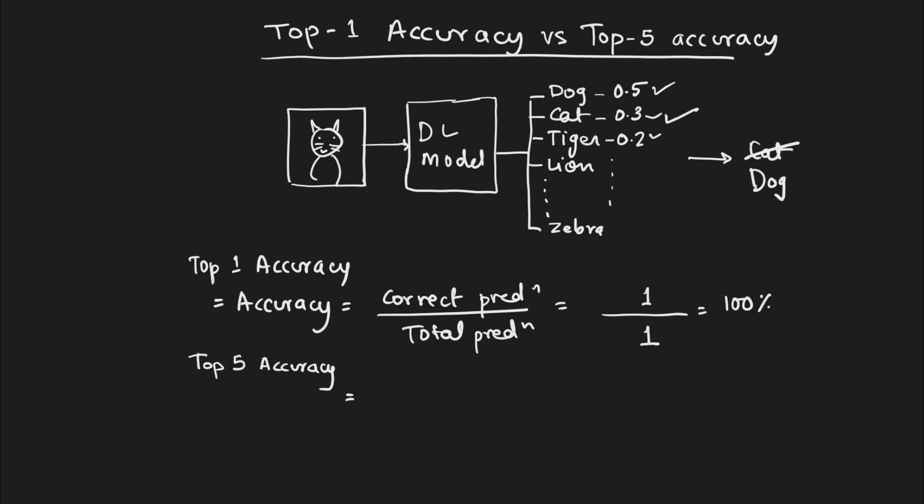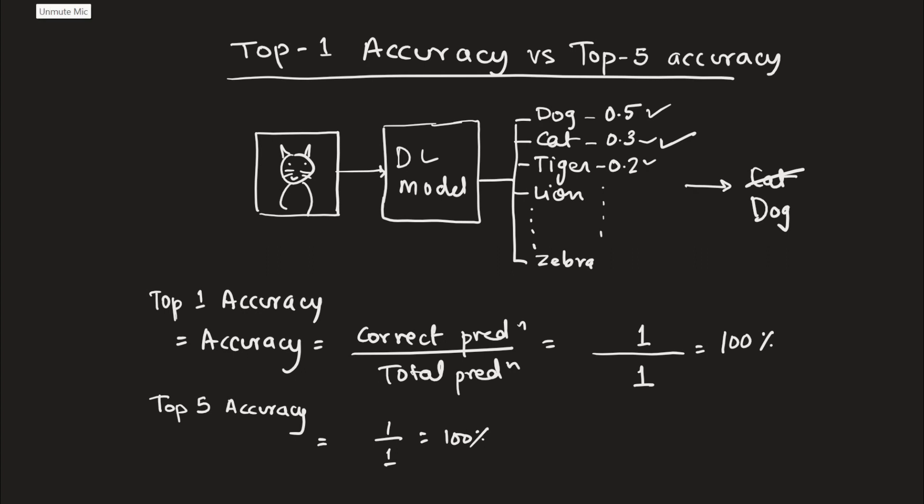So our top-5 accuracy is again 1 by 1 which is equal to 100%. Please note that in the previous case the top-1 accuracy was 100%, but in this case the top-1 accuracy is 0% because the model predicts that the cat image is actually of a dog. So the top-1 accuracy is 0% whereas the top-5 accuracy is 100% in this case.